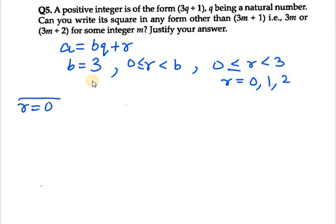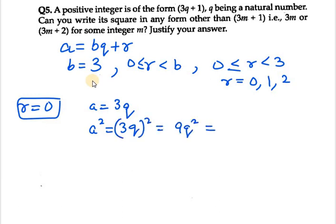For r equals 0, a equals 3q. Now we need to check the square of it. a square equals 3q whole square, so it can be written as 9q square. Now we need to make it as 3m. So I would be taking 3 out and we are left with 3q square inside. So 3q square can be written as m. You need to define that, where m equals 3q square.